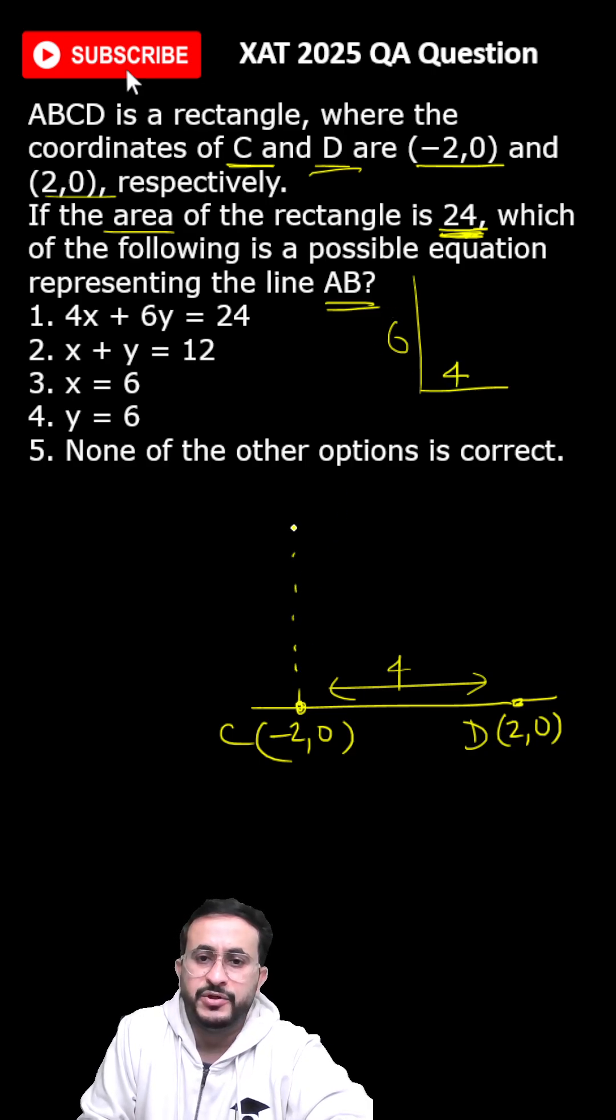The 6 can be on this side, or it could be at a distance below it. It can be above or below. If you take A and B over here, in that case this is (-2,6) and (2,6).